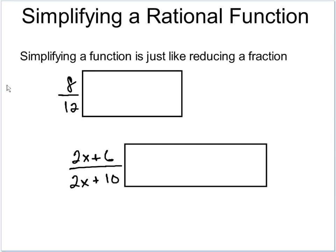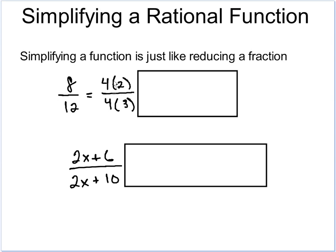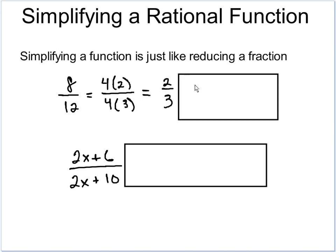As you can see in this first example here, we have 8 divided by 12. If you remember back to elementary school when you were simplifying fractions, we would just factor out something that's the same in both of them. So both those numbers can be divided by 4. Now we have 4 times 2 over 4 times 3, and we would just cancel out the 4's and we'd be left with 2 divided by 3.